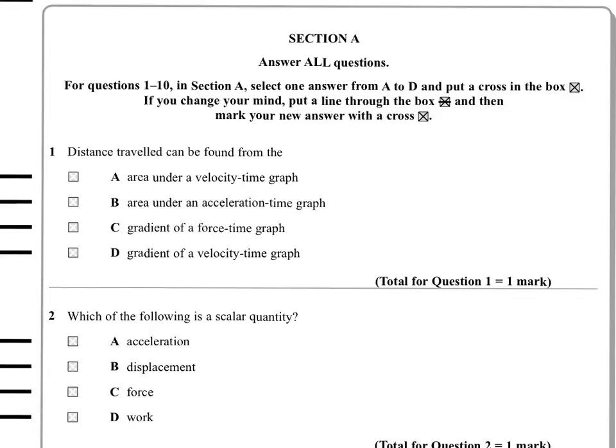We start with this question about distance traveled can be found from one of these quantities: area under velocity time graph, area under acceleration time graph, gradient of a force time graph, gradient of a velocity time graph. The closest thing to the correct answer is A. The area under a velocity time graph is the displacement, not the distance traveled. But as I say, it's the closest thing to the correct answer, so we'll pick that.